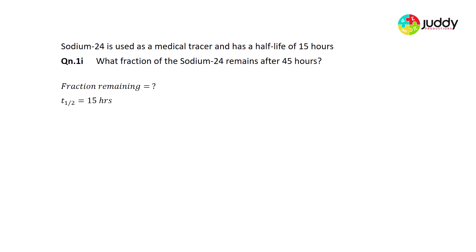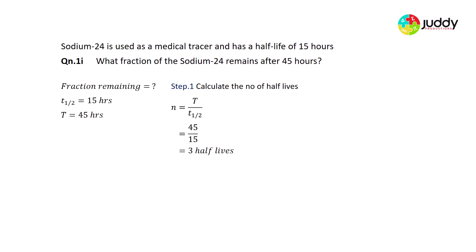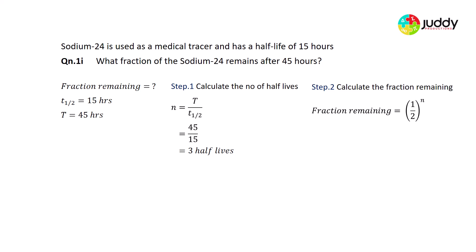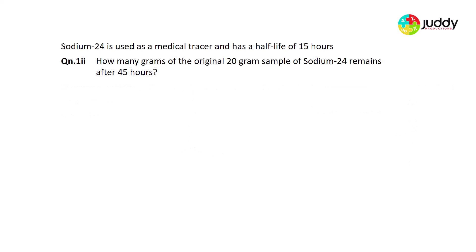We can also do this mathematically. The half-life t½ is 15 hours, and the total time T is 45 hours. Step 1: calculate the number of half-lives — total time divided by time for one half-life: 45 ÷ 15 = 3 half-lives. Step 2: fraction remaining equals (½)^n, where n is the number of half-lives. So (½)^3 = ½ × ½ × ½ = one-eighth.